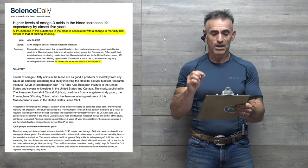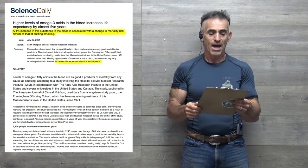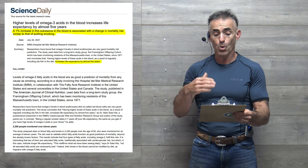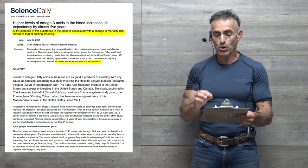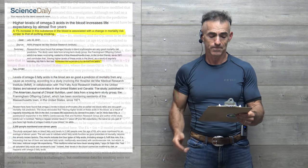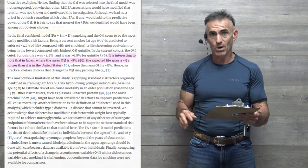And concludes that having higher levels of these acids in the blood as a result of regularly including oily fish in the diet increases life expectancy by almost five years. 4.7 if you want to be particular.